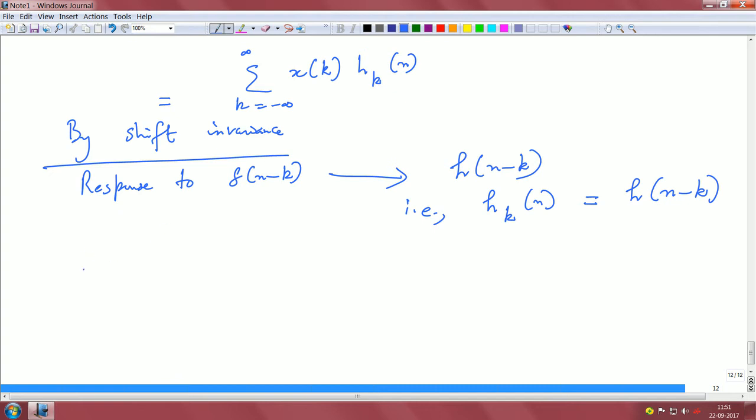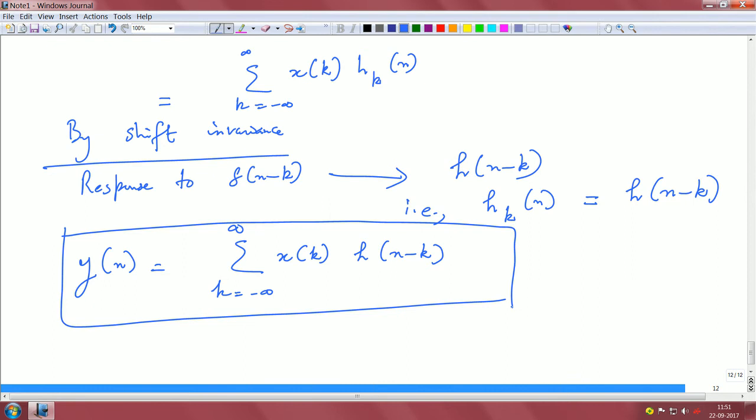So now we are ready: y(n) is summation k equals minus infinity to plus infinity, x(k) h(n minus k). And this is an important relationship, because this operation is the convolution operation between sequences x(n) and h(n). From this step we can come to the last step, because of shift invariance.